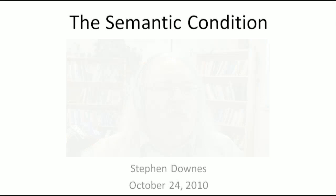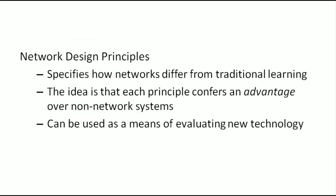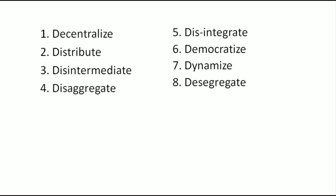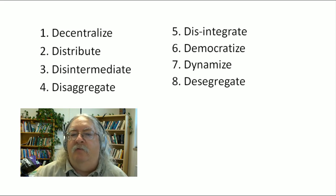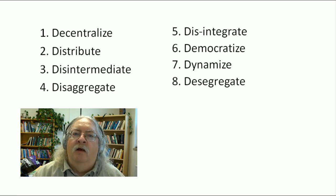A network design principle tells us, more or less, how a network differs from traditional learning. The idea is that each principle confers an advantage over non-network systems. It's a way of evaluating new technology. Overall, there are eight different network design principles. These principles are, in order: decentralized, distribute, disintermediate, disaggregate, disintegrate, democratize, dynamize, and desegregate. Most of these talk about the physical construction of the network, but one of these principles is special.